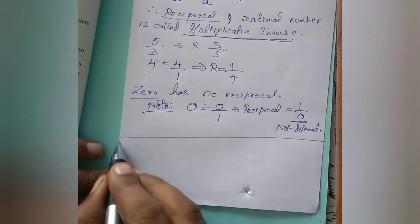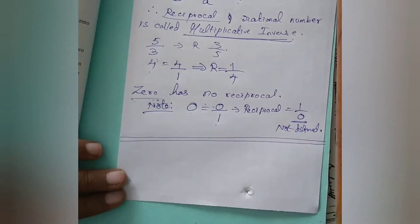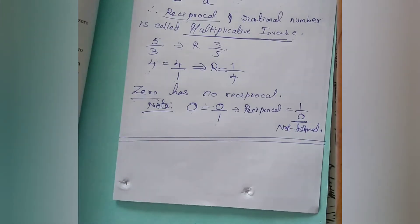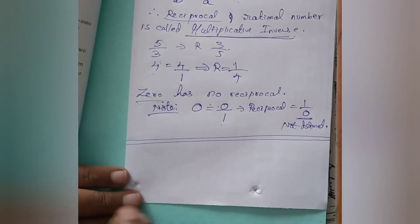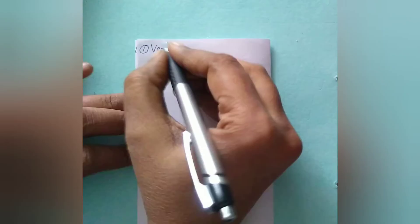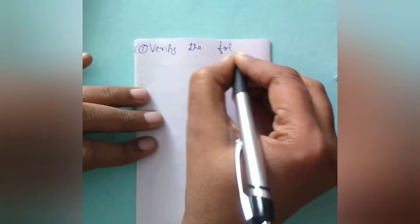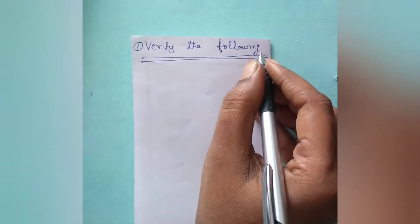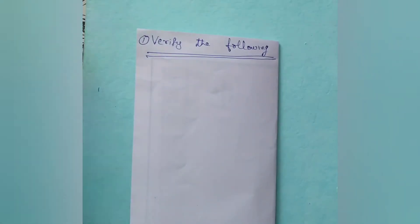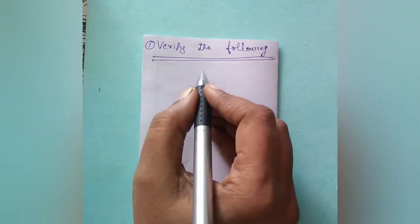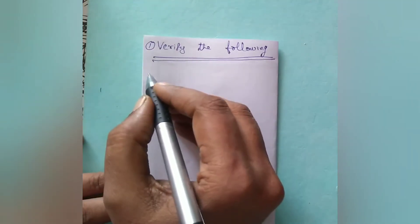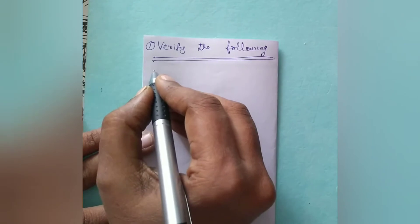Now we have covered the important points and properties of rational numbers under addition and multiplication. We will now do practice problems based on annual exams and school tests from various schools like Air Force School, Delhi Public School, and KV. We will revise the maximum possible questions from this chapter, focusing on areas where students tend to make careless mistakes.